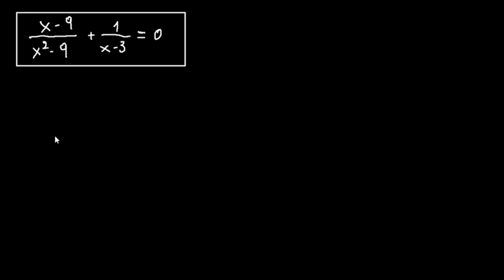Hello everyone! In today's video we are going to solve this equation. We have an equation with fractions: x minus 9 over x squared minus 9, plus 1 over x minus 3, equals 0. Let's start to see how we can solve this.